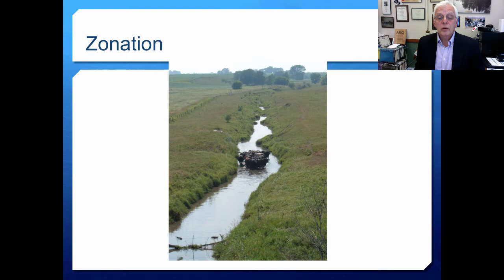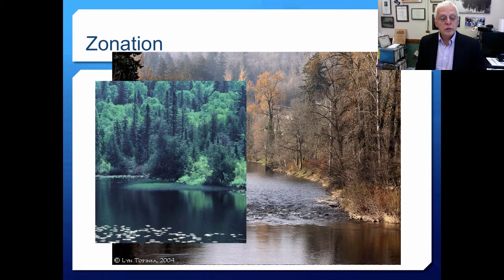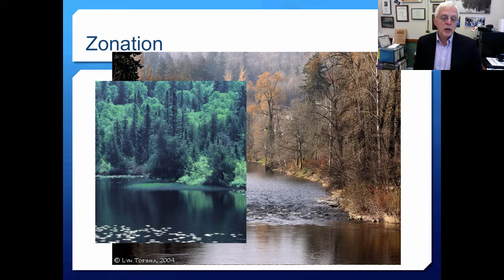The kinds of benthic organisms you'd find in a pool differ greatly from those found in a riffle. Organisms living in a riffle need to hang on and have different kinds of food sources available. Here are some examples of stream zonation, including a channelized stream beginning to reclaim its meandered structure, and a slower system with aquatic macrophytes such as lilies and sedges indicating very slow flow.